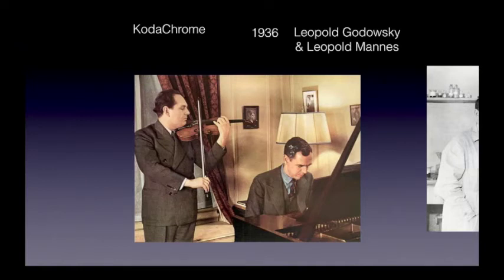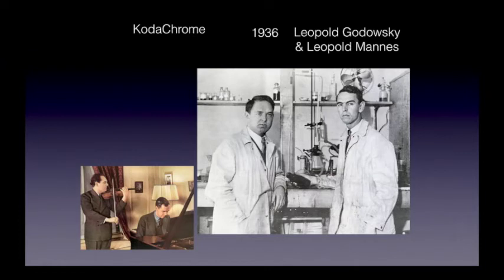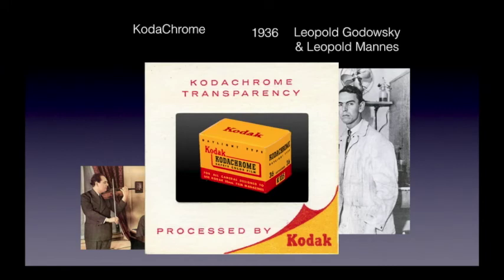Leopold Godowski and Leopold Manns — two professional musicians and amateur chemists — were the two people responsible for figuring out in Eastman's labs how to make color photography possible on a commercial scale. That color material, Kodachrome, was released in 1936, and required a lab with very careful controls for developing the color material, which of course created a lapse of time in order to process the film.